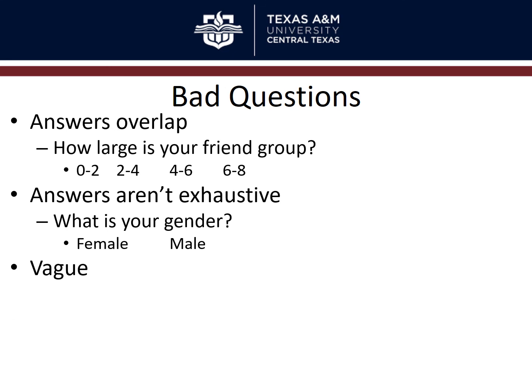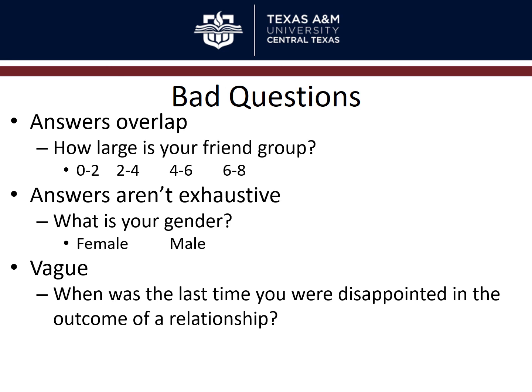Vague questions are also a problem — this often happens when you don't run the questionnaire by someone else first. For example, 'when was the last time you were disappointed in the outcome of a relationship?' might be interpreted as a friendship or work relationship rather than a romantic one if you don't specify. Always do a pilot test and ask what you mean to ask — don't leave too much room for interpretation.